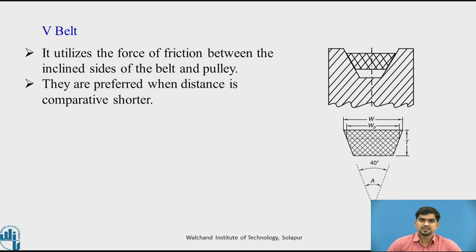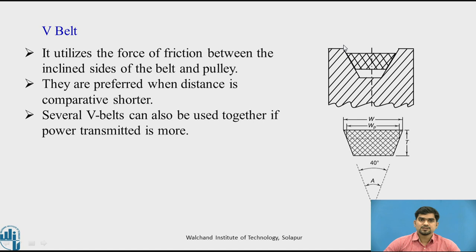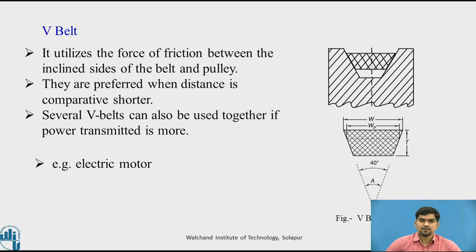V-belts are preferred when the distance between shafts is comparatively shorter. If the distance is more, we prefer a flat belt drive. If the distance is smaller, we use this belt. Several V-belts can also be used together if power transmission requirement is more — we can use multiple V-belts. For example, in the electric motor, the distance is very small, so we can use the V-belt in this case.